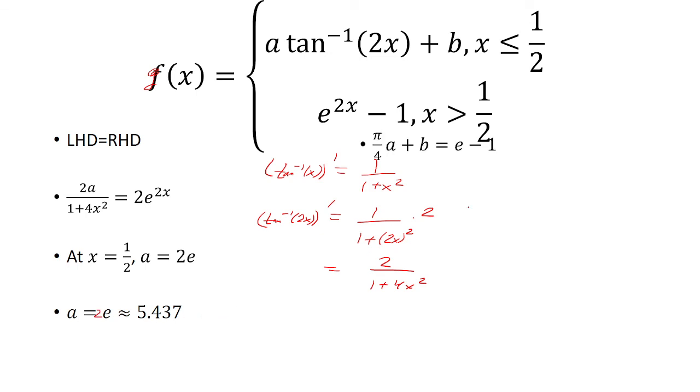Well, now we said pi over 4a plus b equals e minus 1 from the previous slide. So substitute a equals 2e. And then pi over 4 times 2e is just pi over 2e. Solve for b and get that b is about negative 2.552. And that is our answer.